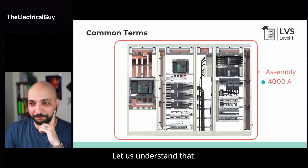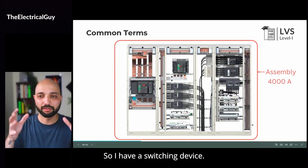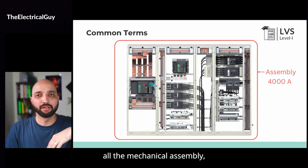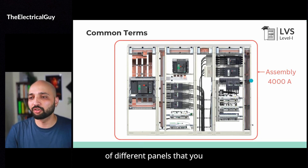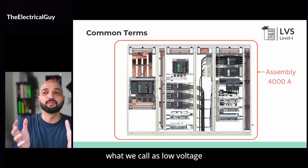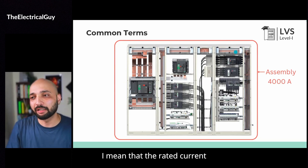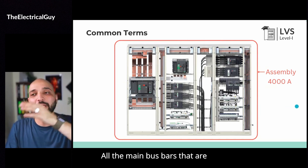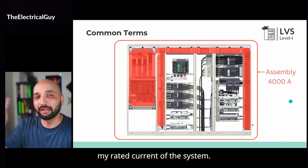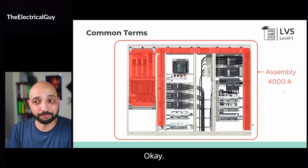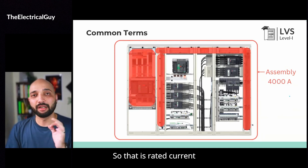Now what is assembly? When I say low voltage switchgear assembly, I mean the complete switchgear combined together. I have a switching device, and to that switching device I have connected everything — all the mechanical assembly. It could be one single panel or it could be the combination of different panels that you can see on your screen. Everything put together is what we call the low voltage switchgear assembly. When I say rated current of my assembly, I mean the rated current of all the main circuits, all the main busbars that are carrying the current. All these busbars should carry the rated current of the system, which is 4000 amperes.